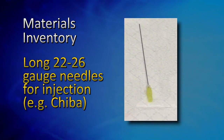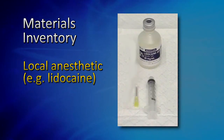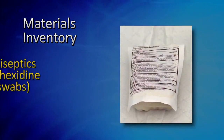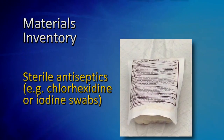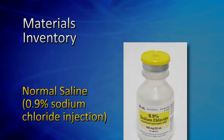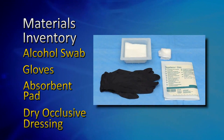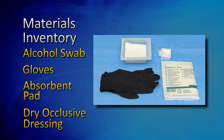Long 22 to 26-gauge needles for injection. Local anesthetic may be used as appropriate. Sterile antiseptics. For saline washout, injectable normal saline. The cleanup gear needed for the injection site post-procedure consists of an alcohol swab, a new pair of gloves, absorbent pad, and dry occlusive dressing.